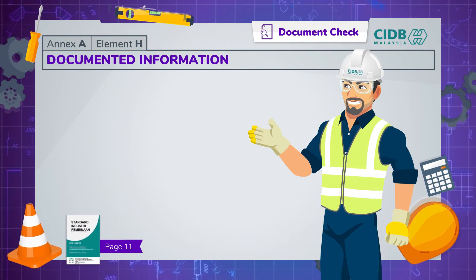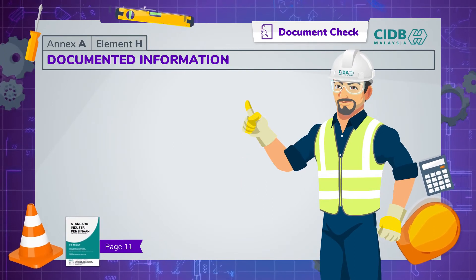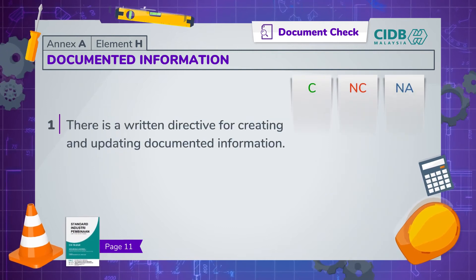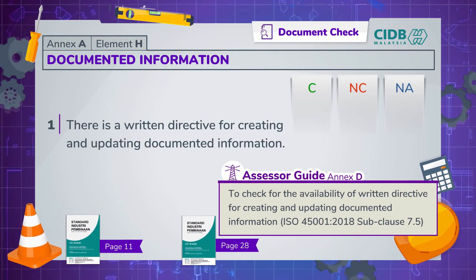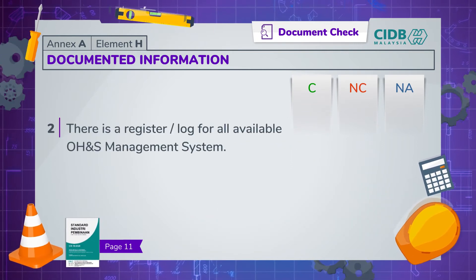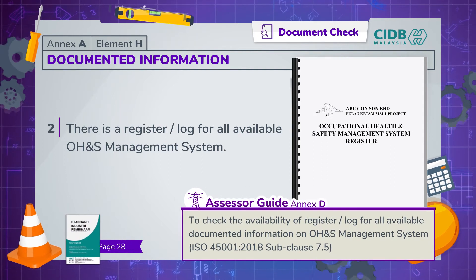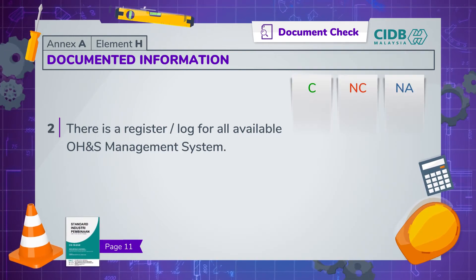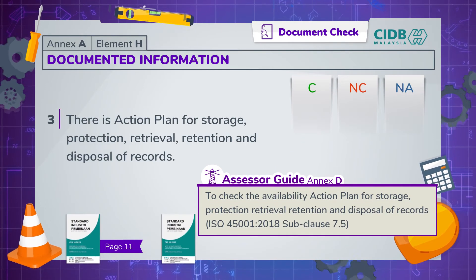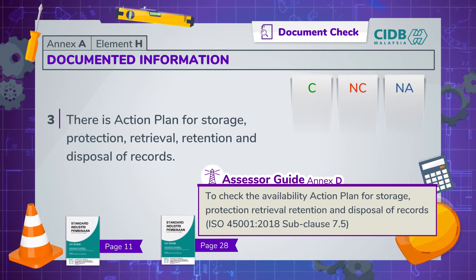Element H is about assessing how well a site has been keeping its OSH documentation. First, there has to be a written directive for creating and updating documented information. Next, check if there's a register or log for all available documented information in the OSH management system, and that there's an action plan for the storage, protection, retrieval, retention and disposal of records. Mark non-compliance if there's no such action plan.